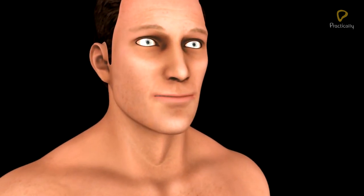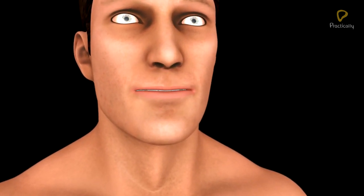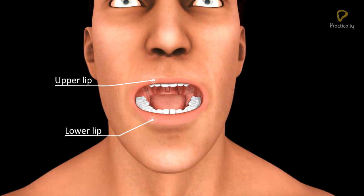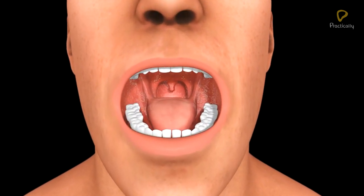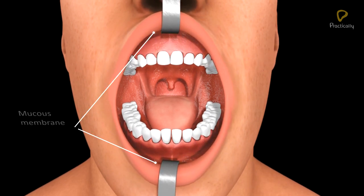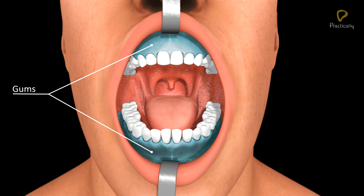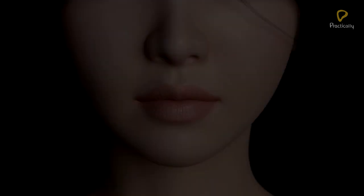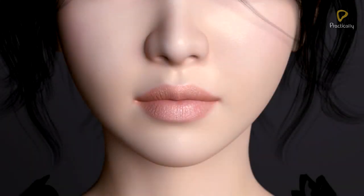The mouth is a transverse slit or aperture bordered by two soft and fleshy lips, or labia. The lips are externally covered by skin and internally lined by mucous membrane. They are attached on the inner side to gums by a thin transparent fold of mesentery called the labial frenulum. The middle part of the upper lip has a vertical groove called the philtrum, which is a beauty sign.